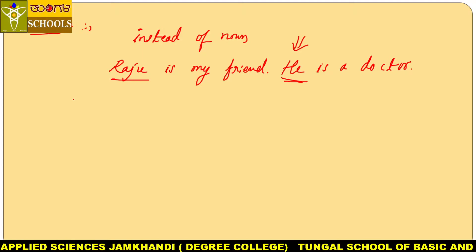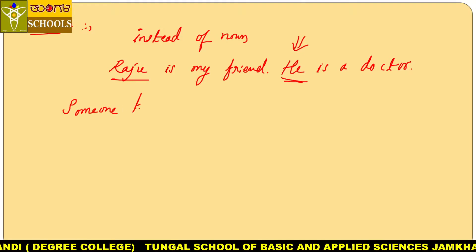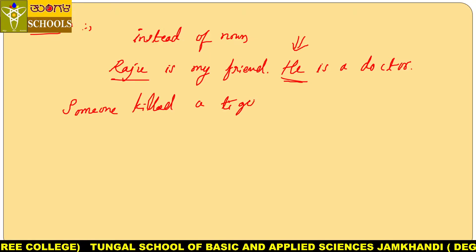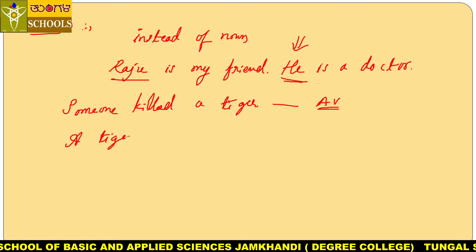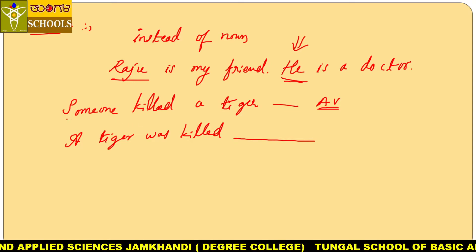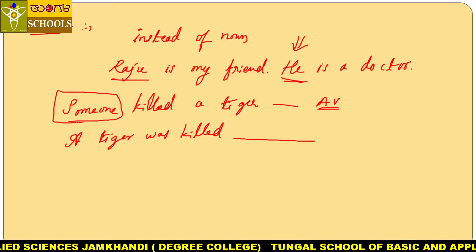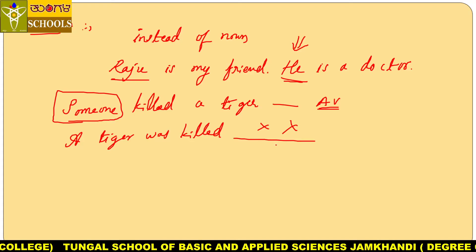On the basis of this, we have examination-oriented questions. For example: 'Someone killed a tiger.' This is an active sentence. If we convert it to passive, it becomes: 'A tiger was killed.' There is no need to write 'by someone' here, because when we don't know who killed the tiger, we don't use any object. So using 'by someone' would be wrong — this is the kind of error you have to find in your examination.